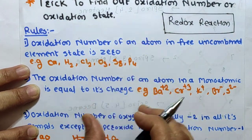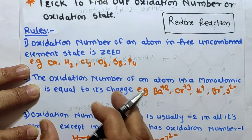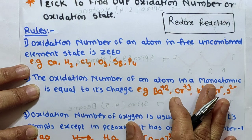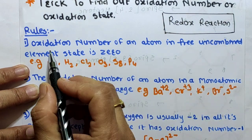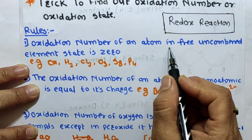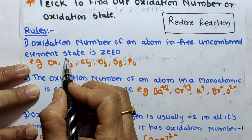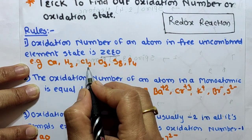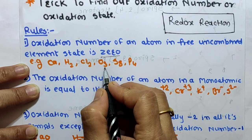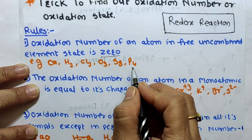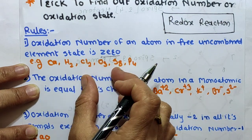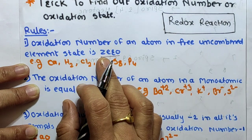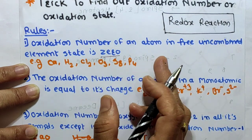These are the general rules to assign oxidation number to an atom in any molecule or ion. Rule 1: The oxidation number of an atom in its free or uncombined elemental state is 0. For example, calcium, hydrogen, chlorine, O3 (ozone), S8 (sulfur), and P4 — these atoms are in a free or uncombined state, hence their oxidation number is 0.